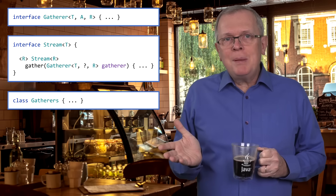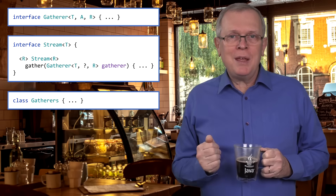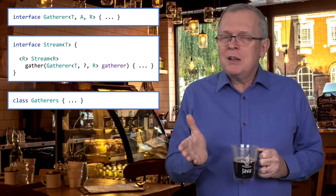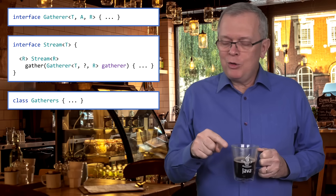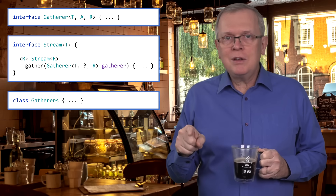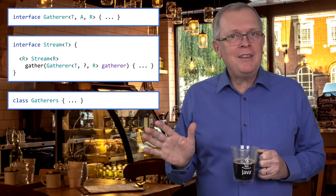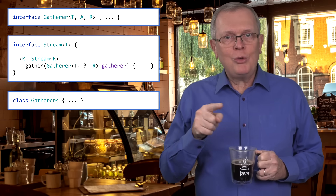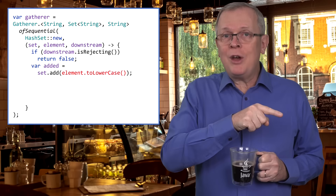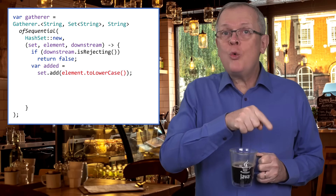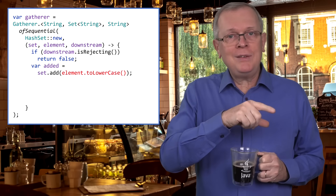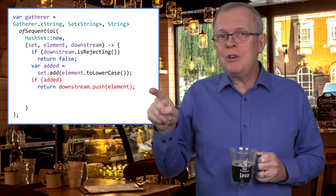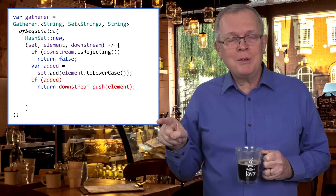Imagine that you need to implement a distinct-like behavior, but with your own way to compare objects for equality, like comparing strings of characters ignoring case differences. You can map your strings to lowercase, store them in a hash set within your gatherer, and if they are not already in this hash set, push the original element to the downstream.